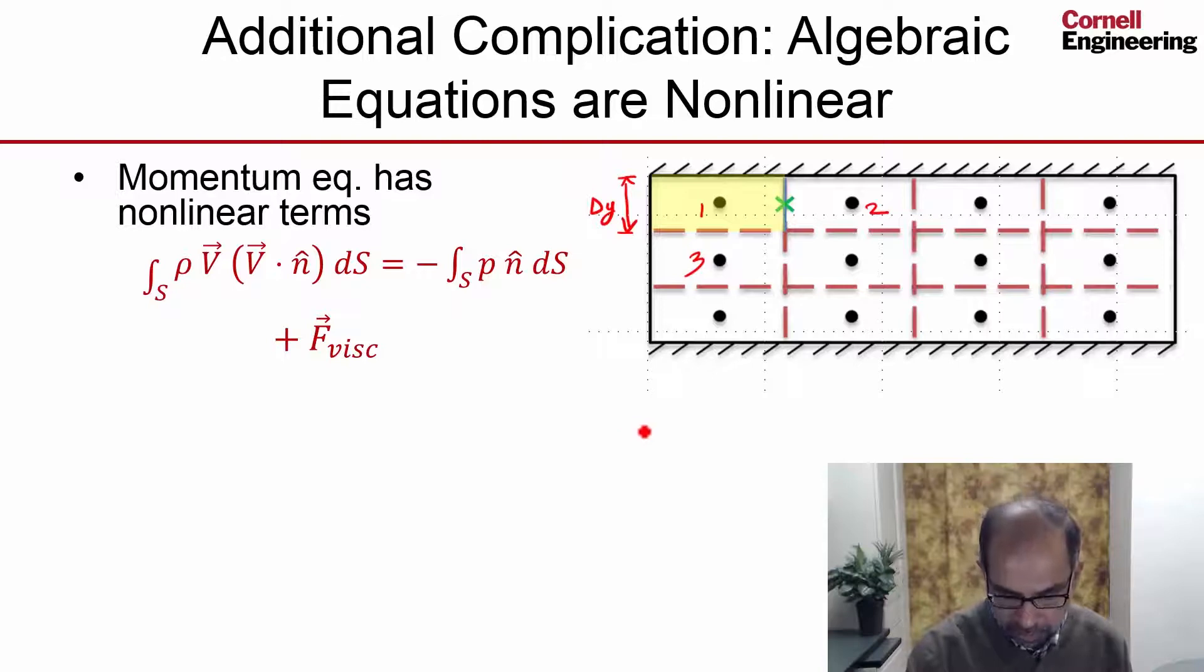We're looking at the momentum, rate of momentum flow in the x-direction—let's say we do it in the x-direction—at the face between cells 1 and 2.